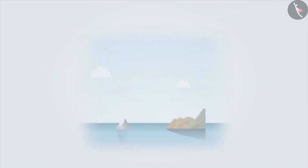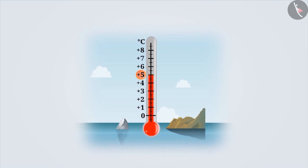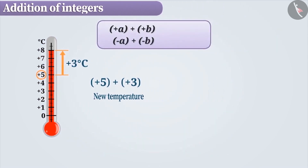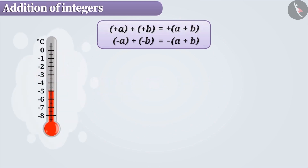Let us suppose the temperature of a certain place is plus 5 degrees centigrade. If it increases by plus 3 degrees, then the new temperature can be found by finding the value of plus 5 plus plus 3. If the signs of the integers are the same, then they are added without sign. After that, the sign is included with the result. While adding two positive integers, we add them without sign and later the plus sign is included in the result 8, that is, it is expressed as plus 8.